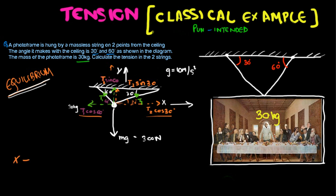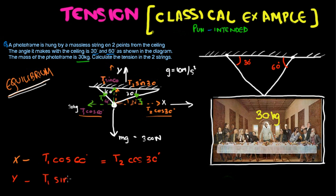In the x-axis: T1 cosine 60 equals T2 cosine 30. In the y direction: T1 sine 60 plus T2 sine 30 equals 300 newtons. Now all we need to do is solve these two equations.